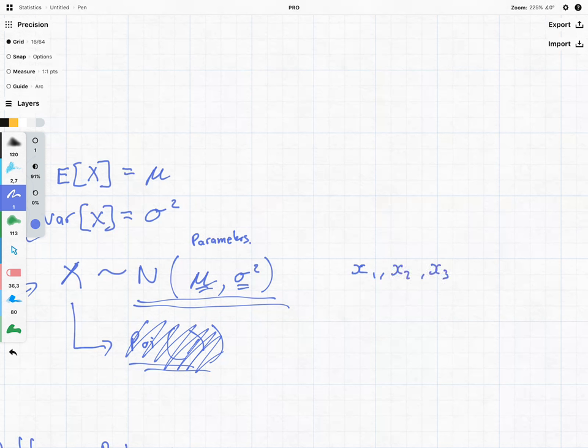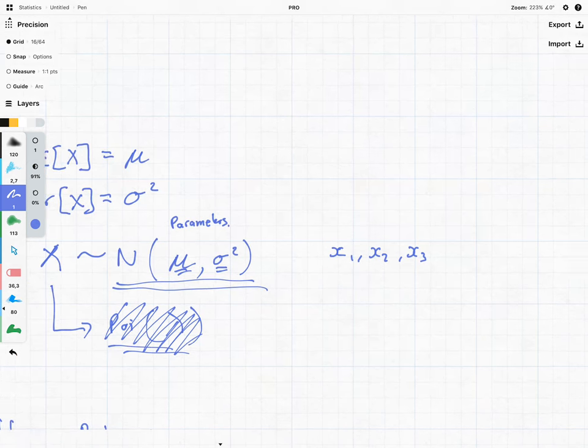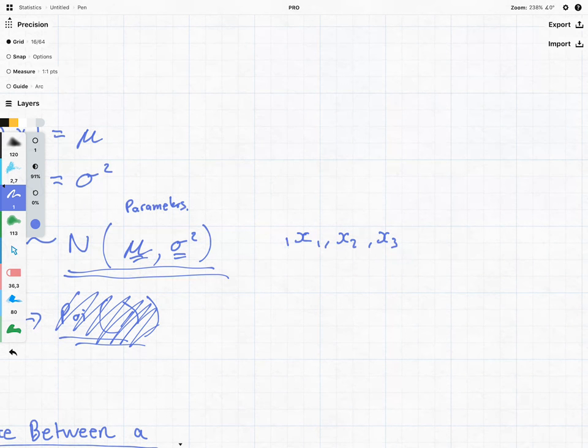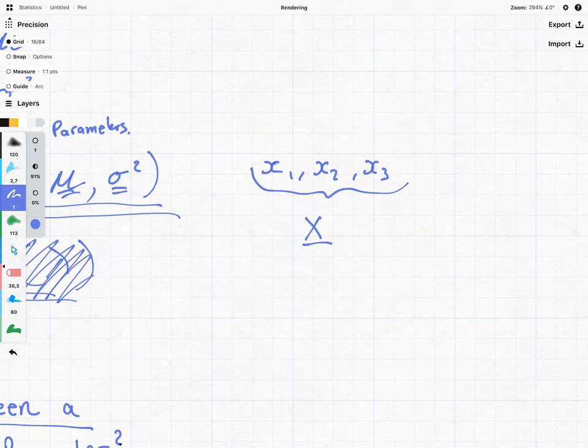And together, we can refer to them as a random sample, or we use the notation x underline. So x underline is going to be our random sample, or it is a group of observations. And this is where things get interesting, because our statistic